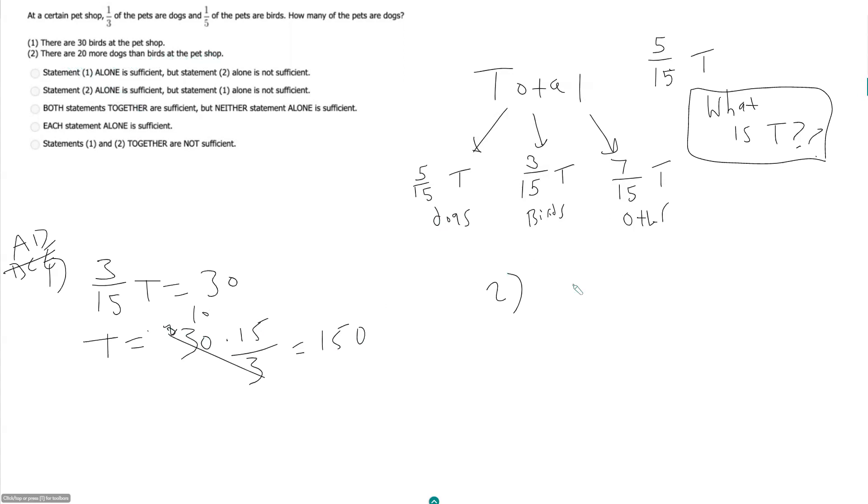So that means 5-fifteenths T, so my dogs, are equal to my birds plus 20, which is 3-fifteenths T plus 20. And so then we can subtract 3-fifteenths T from each side and we get 2-fifteenths T is equal to 20.